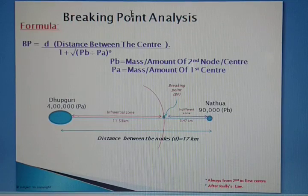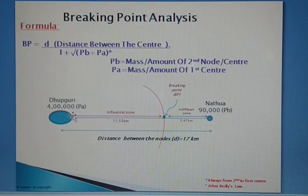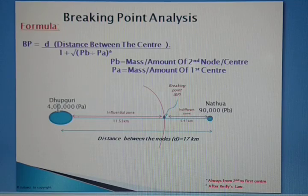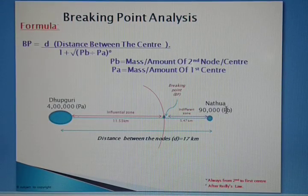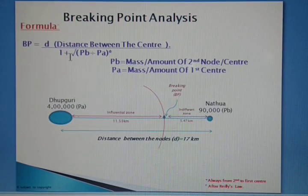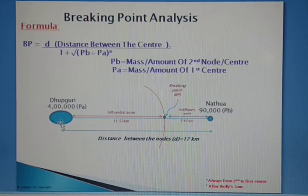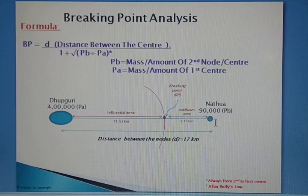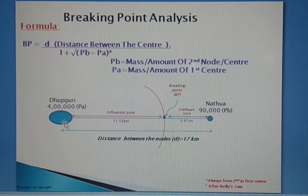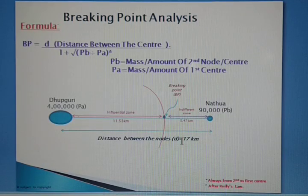In this diagram you can easily understand how breaking points function. Here we have two cities: one is Dhubguri and another is Natua. Dhubguri has a population of four lakh and Natua has 90,000. The formula is: d divided by 1 plus root over PV divided by PA, where d represents the distance between the centers — here it is 17 kilometers.